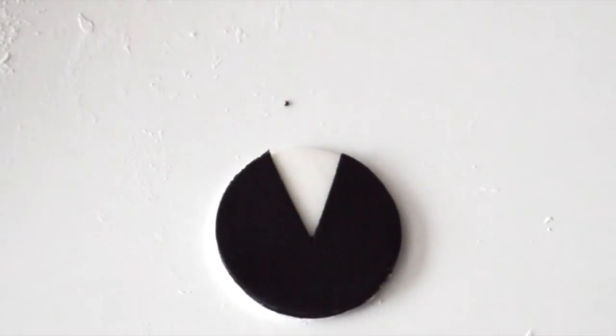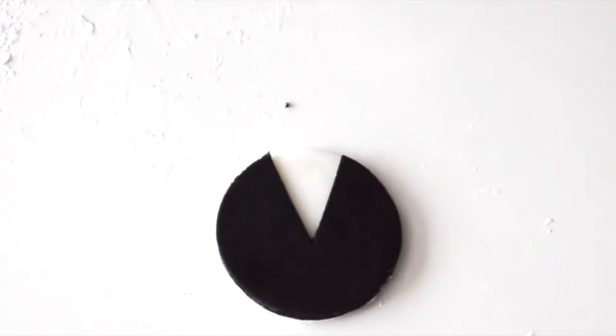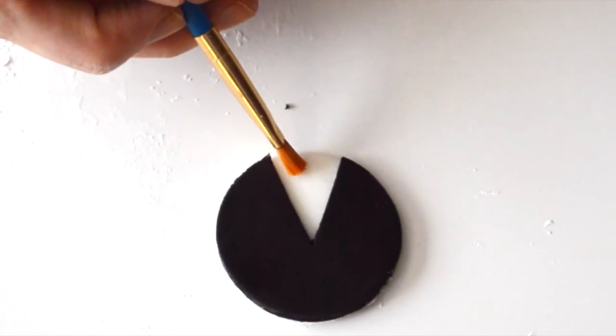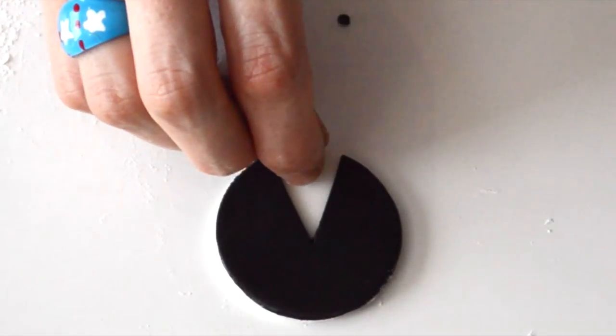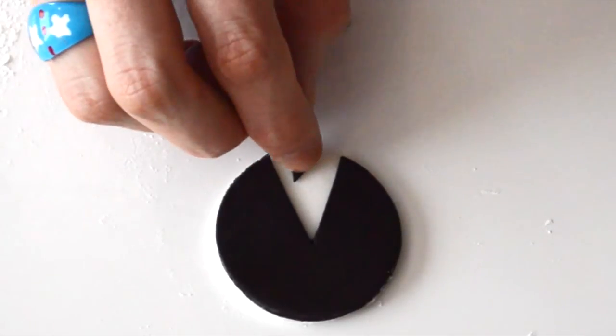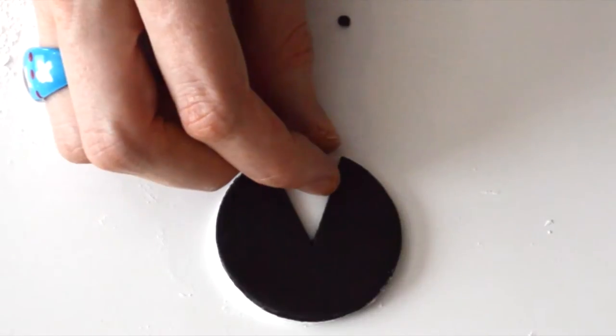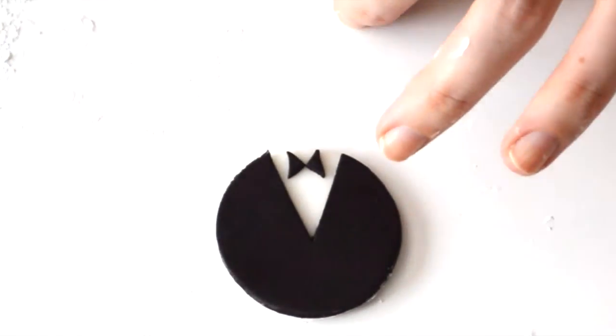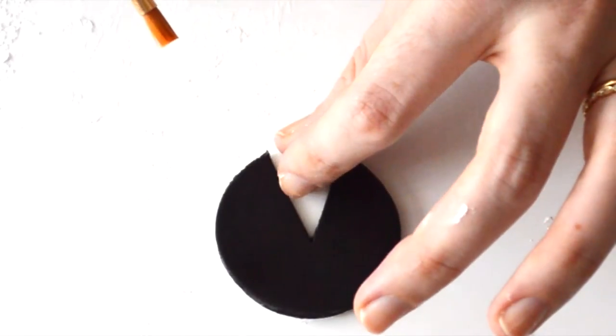Now what we're going to do is take a little bit of water and place it right where we're going to put that little bow tie so that it adheres really well. Just stick one side of the triangle down, and the other side, and then just put a little more water on top of that so we can put the middle on there.